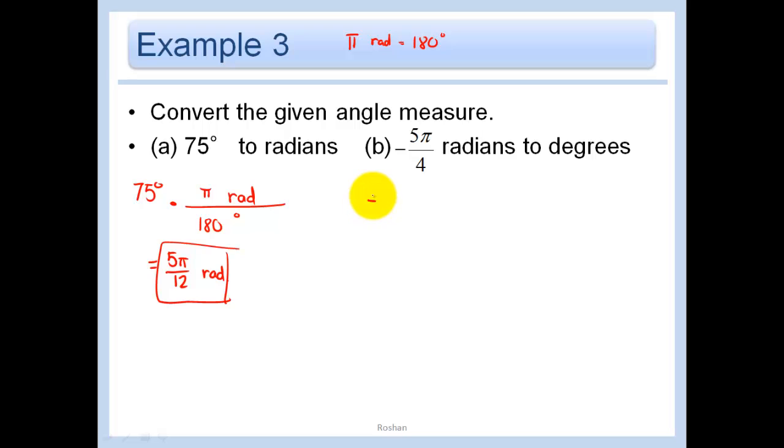In this problem over here, you have negative 5π over 4. The radians are in the top, so we need the radians in the bottom. That's π of them. And 180 degrees goes in the top. We can cancel out the radians. We can also cross out the π. And 180 divided by 4 is 45. And so we have negative 5 times 45, which is negative 225 degrees.